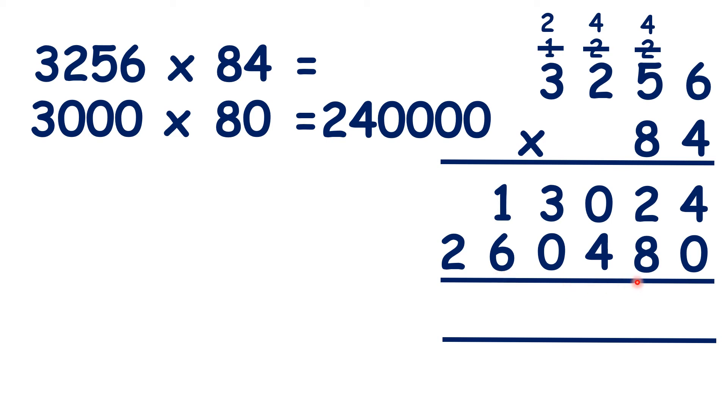So now, adding up our answer lines, 4, 2 plus 8 is 10, 1 plus 0 plus 4 is 5, 3 plus 0 is 3, 1 plus 6 is 7, and nothing plus 2 is 2. So our answer is 273,504, and as we expected, our answer is slightly higher than our estimate.